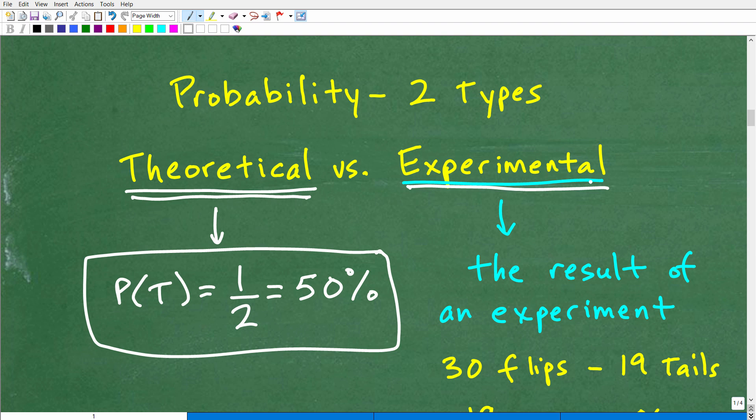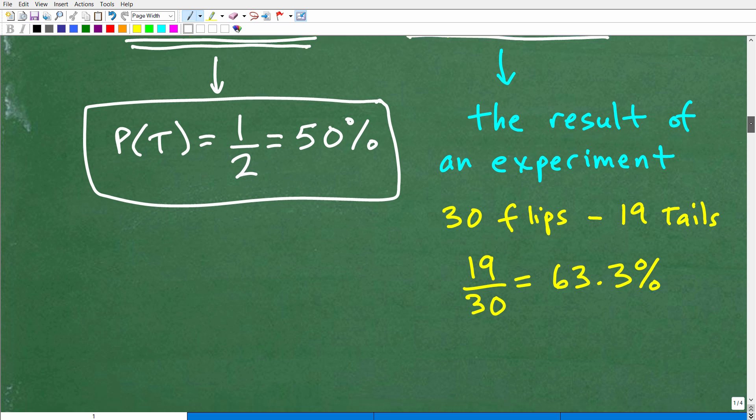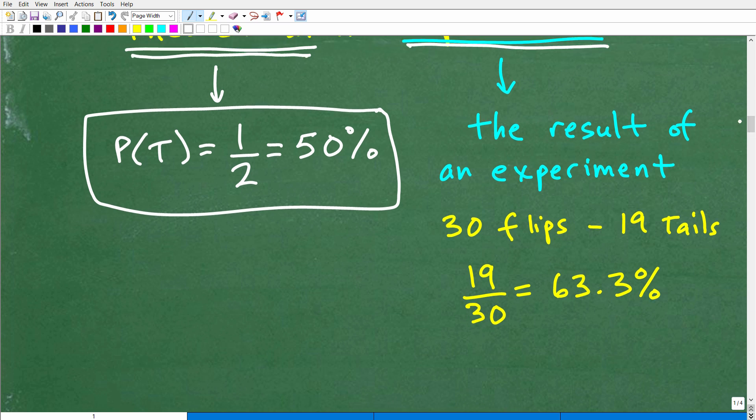But we have this other probability, and that's called experimental. Let's suppose we're like, well, let's go ahead and put this to the test. So here, what we could do is run an experiment. Okay? So let's suppose we run this experiment, and we're going to flip this coin 30 times. We do 30 flips.